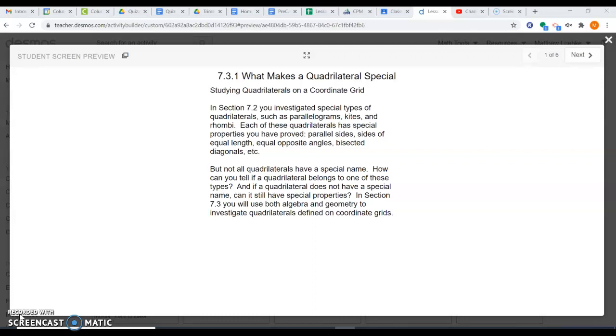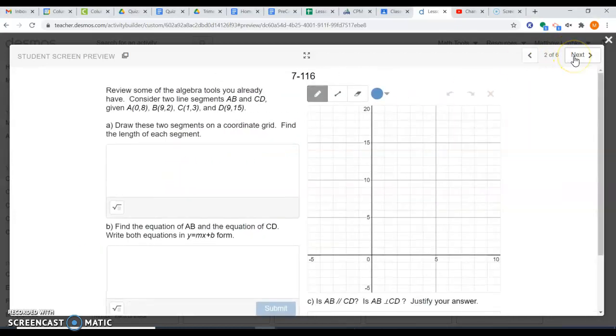We'll be able to find out the lengths of each side and say are they congruent or not. We can find the equations of the sides to figure out are they parallel to each other, are they perpendicular to each other. We can find out information about these shapes just because we have them on a grid. Let's take a look at the first one.